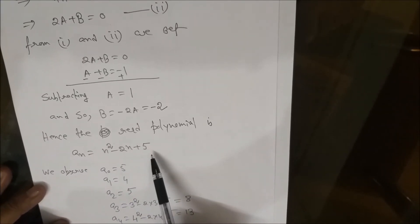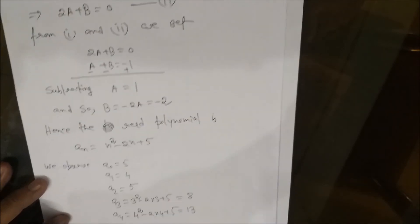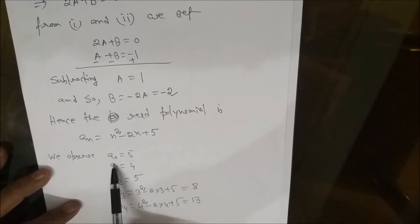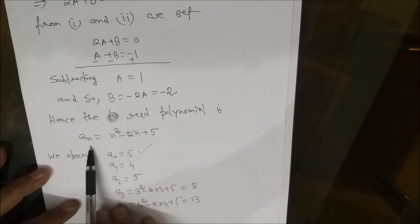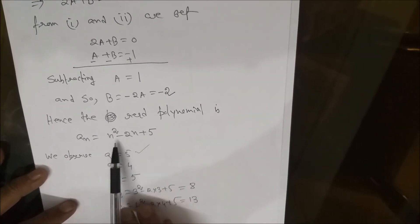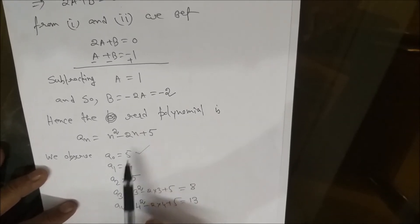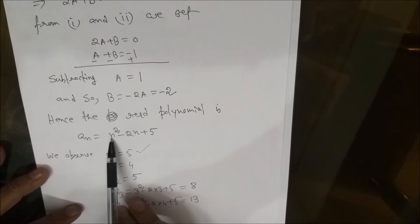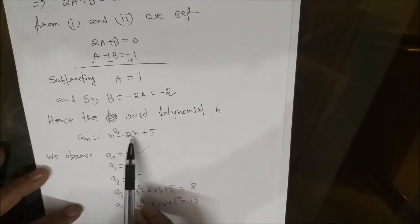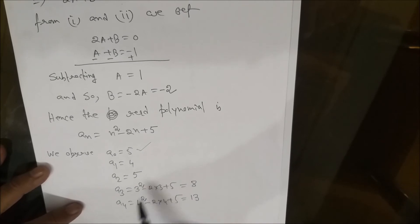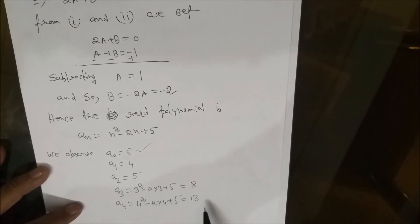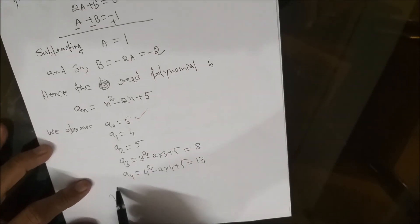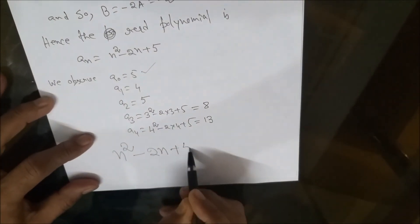So the required closed form is a(n) = n² − 2n + 5. We can verify: n=0 gives 0 − 0 + 5 = 5 ✓; n=1 gives 1 − 2 + 5 = 4 ✓; n=2 gives 4 − 4 + 5 = 5 ✓; n=3 gives 9 − 6 + 5 = 8 ✓. The closed form is confirmed as n² − 2n + 5.